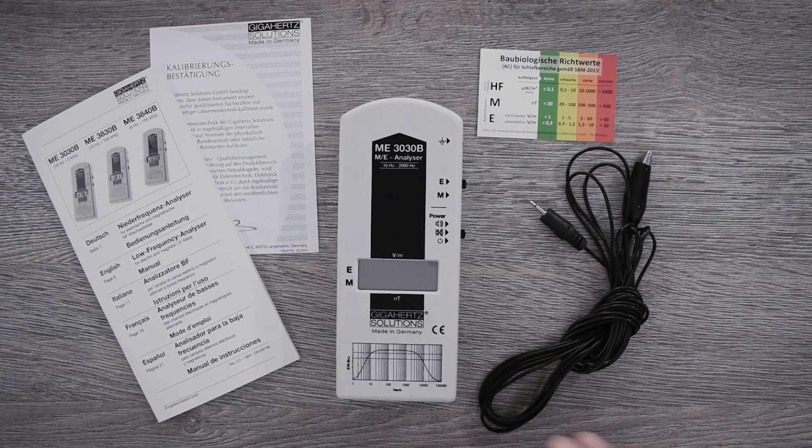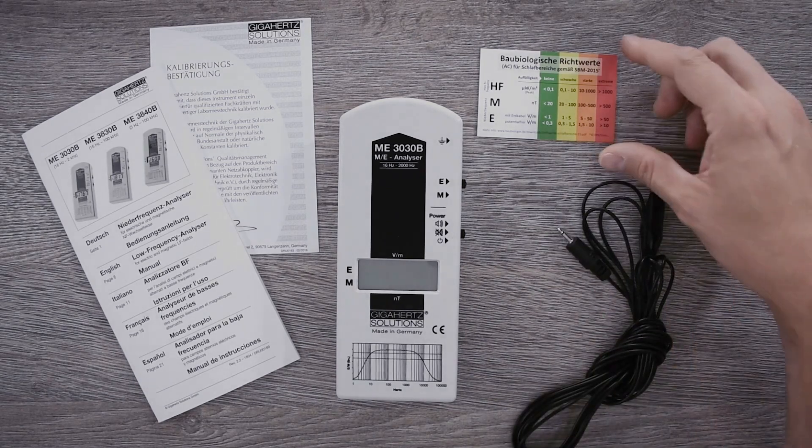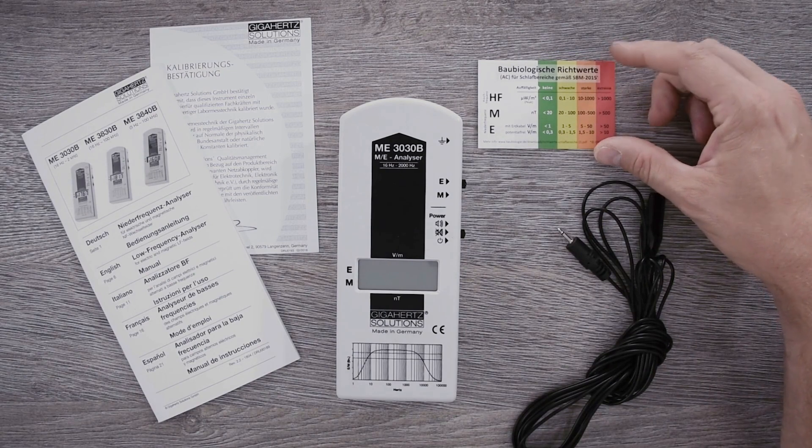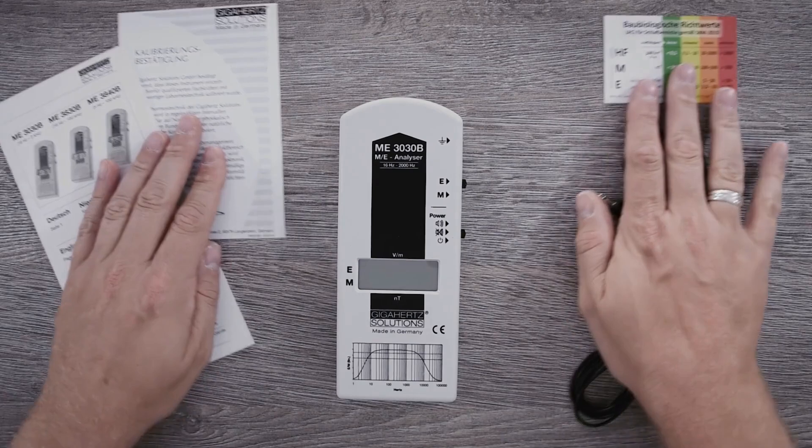After receiving the order, you will find a grounding cable for potential related measurements in addition to the measuring device, a small card showing the building biological reference values, the calibration confirmation, and our manual inside the package.